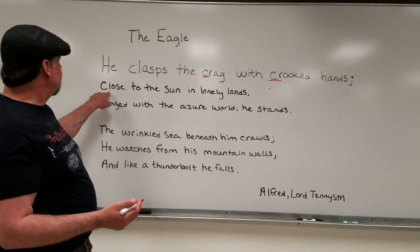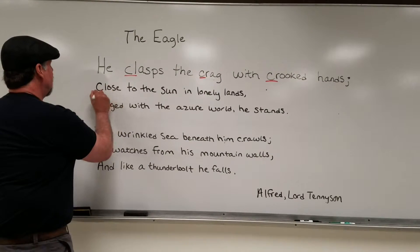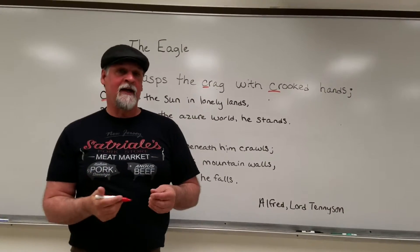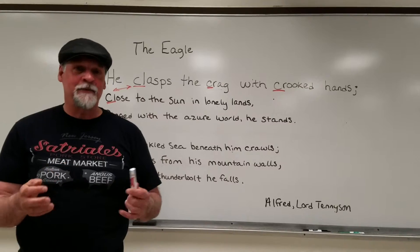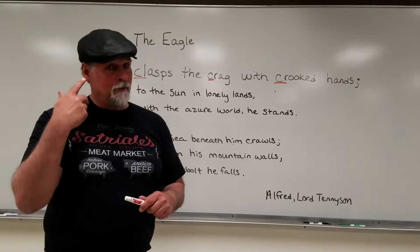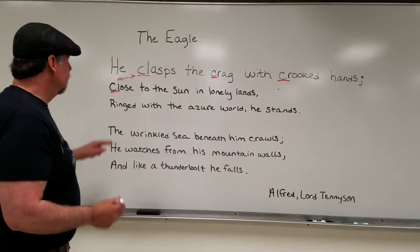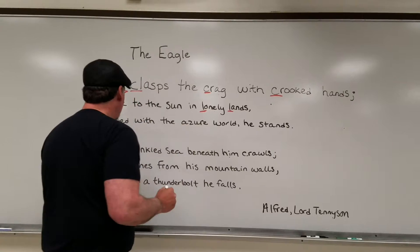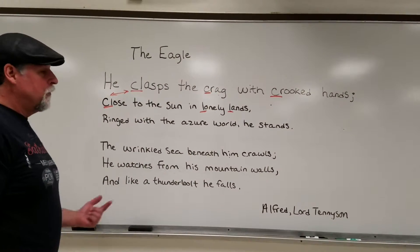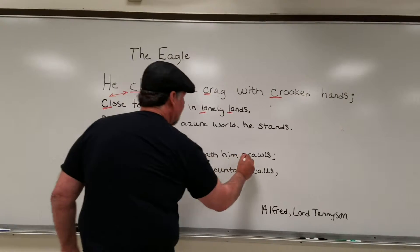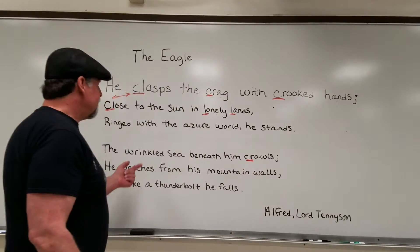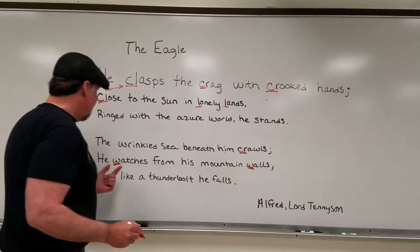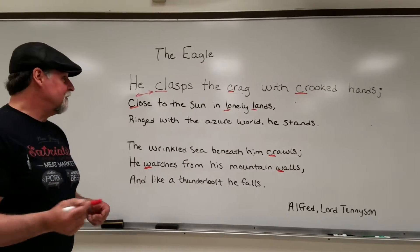We have 'clasps' and 'close' — that's also alliteration. Alliteration doesn't have to occur in the same line or even in words that are next to each other, just words that are close enough that the ear will pick up the similarities. 'Lonely lands' — indeed, we have another example. Then 'Ringed with the azure world he stands' / 'The wrinkled sea beneath him crawls' — we have the CR again. 'He watches from his mountain walls' — we have alliteration with 'watches' and 'walls.' 'And like a thunderbolt he falls.' So there are the examples of alliteration.